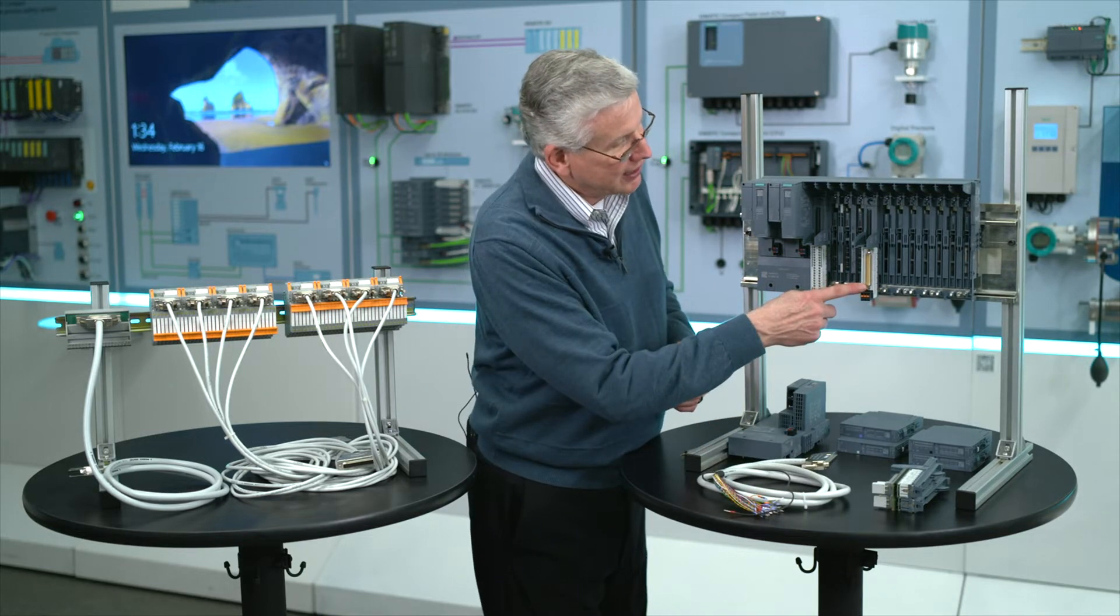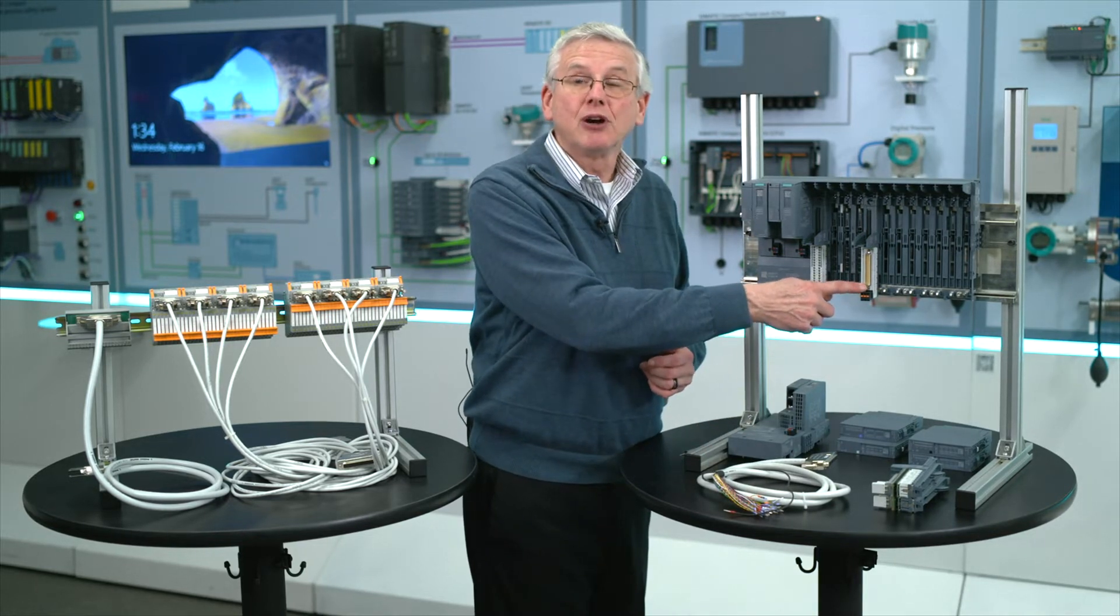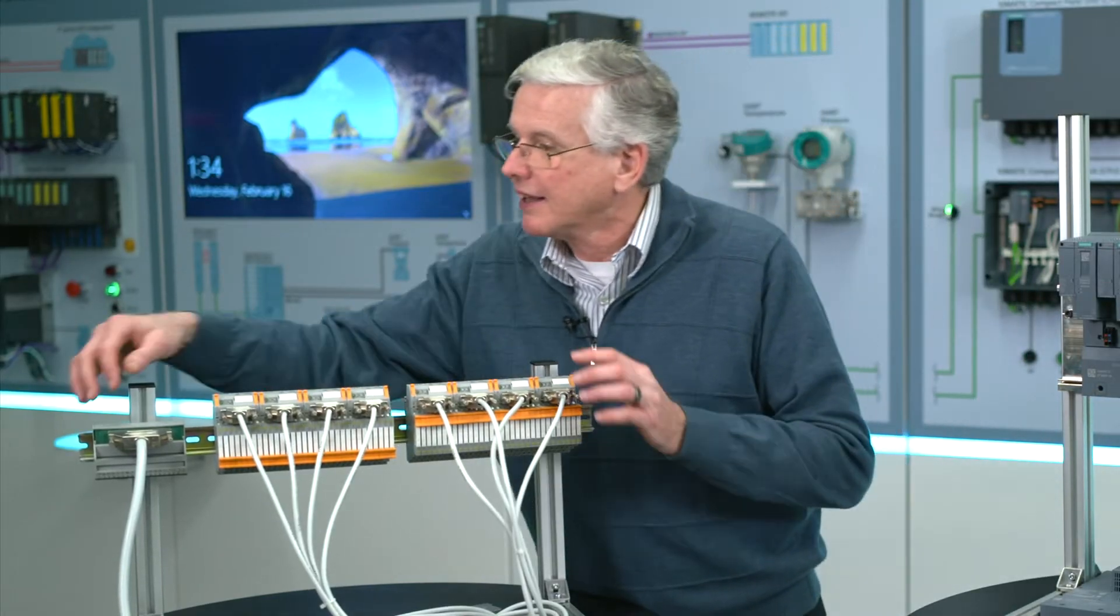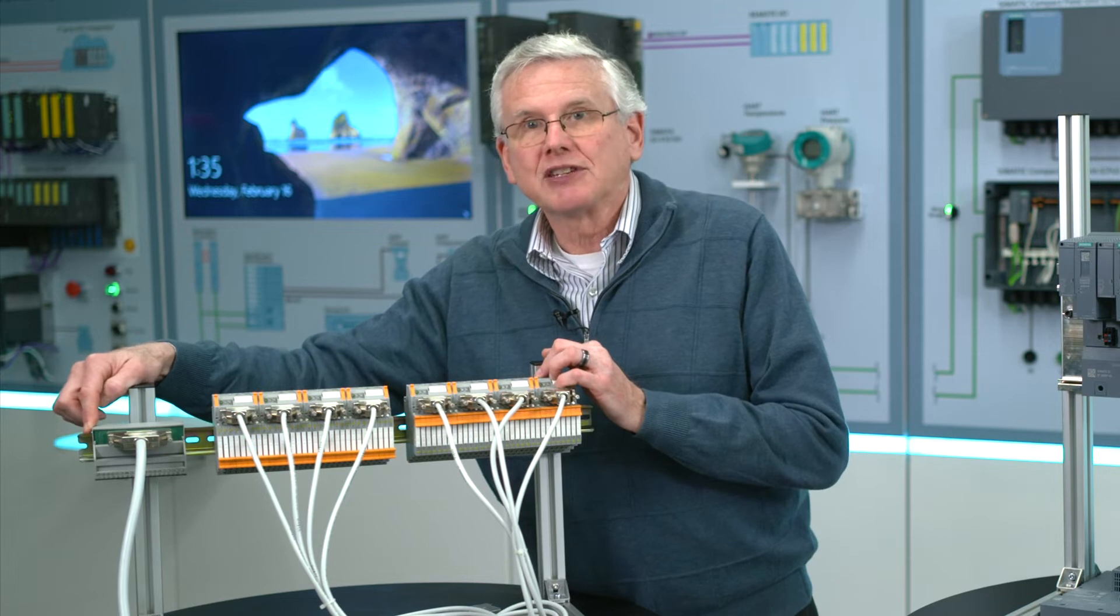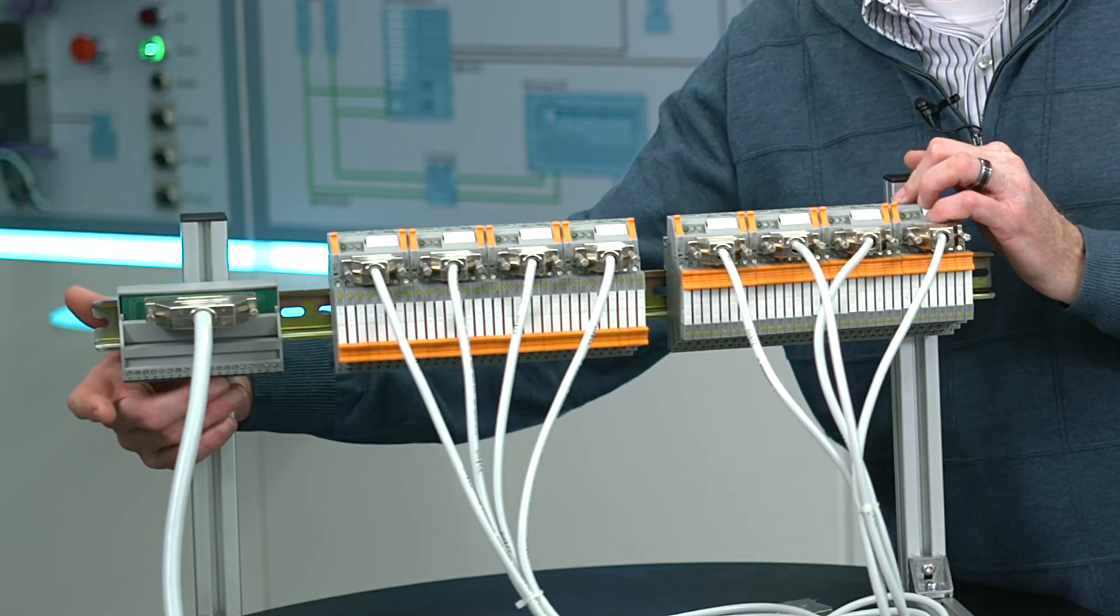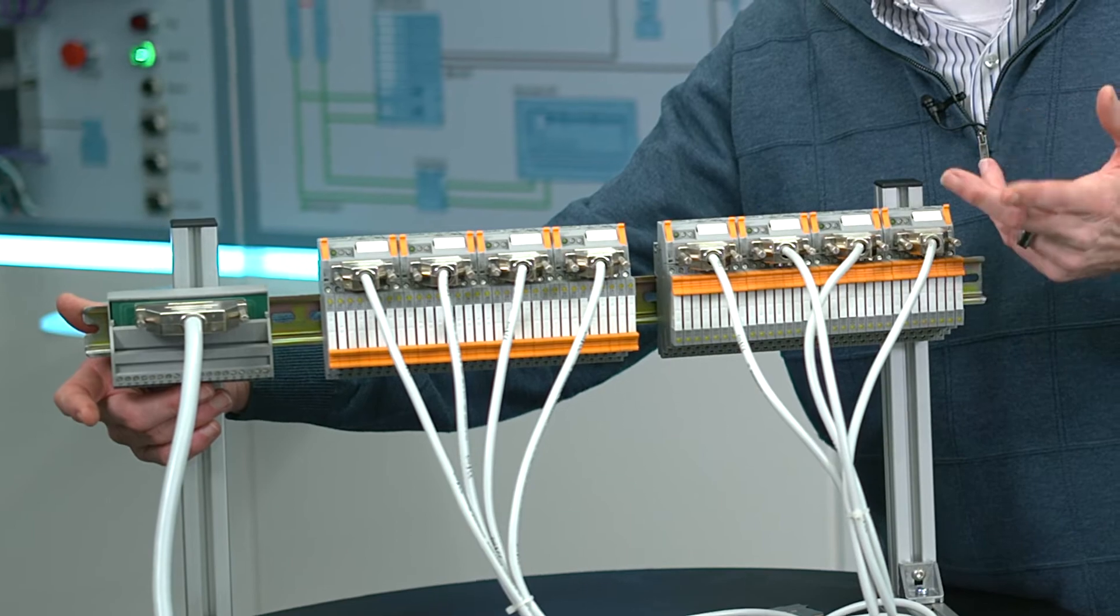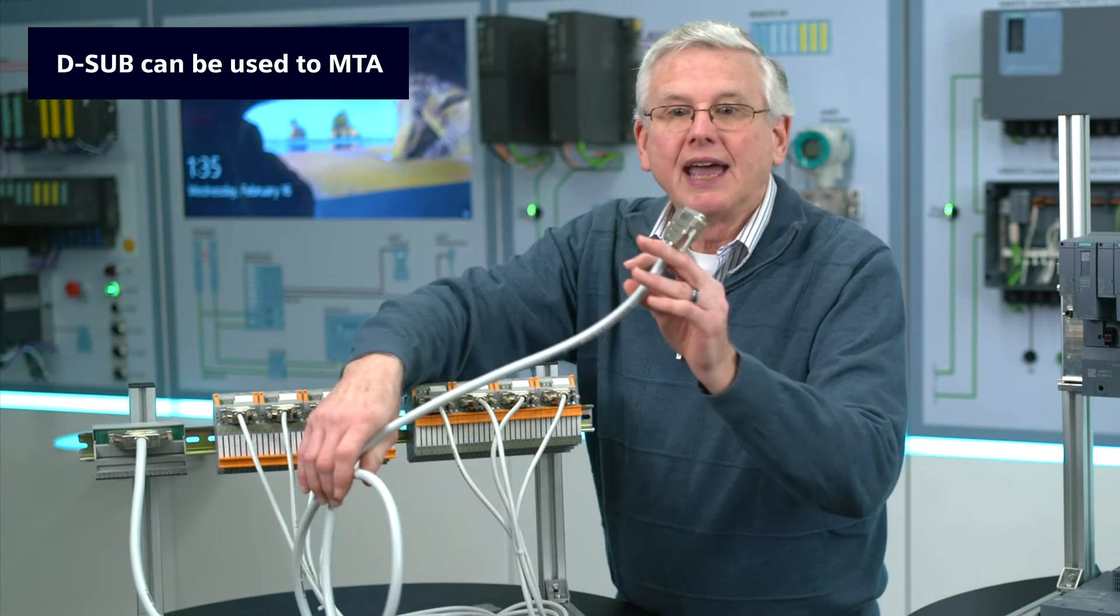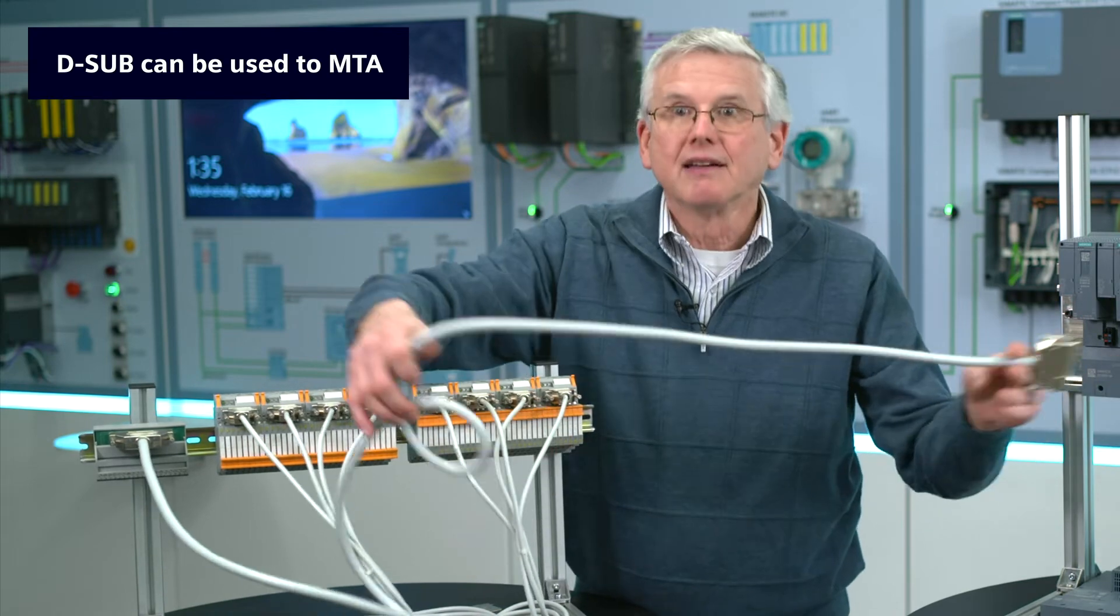In this particular case, I just want to go to a Phoenix terminal block. Can I do that? Sure. So over here on the right, on the far right, we've got the standard Phoenix terminal block for screw terminals for analog in, analog out, discrete in, discrete out. It's got a cable that's already made up, and we can just plug that in, connection's done.